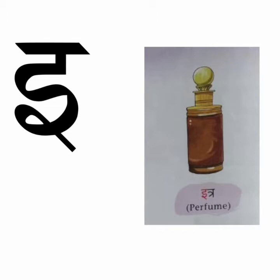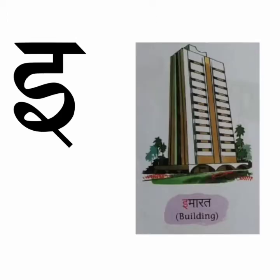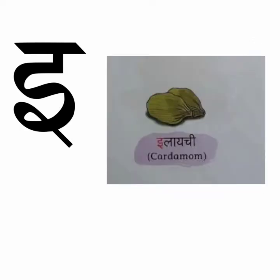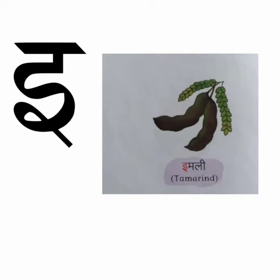Itra means perfume. Perfume is fragrant. E se imarat — imarat means building. We see buildings all around us. E se imarti — imarti looks like jalebi and it is sweet in taste. E se ilaiji — ilaiji means cardamom. It is used in making sweets. E se imli — imli means tamarind. It is sour in taste.